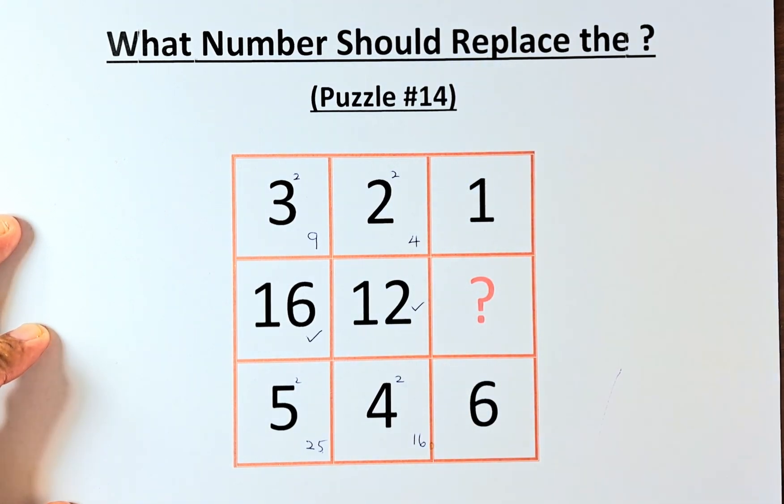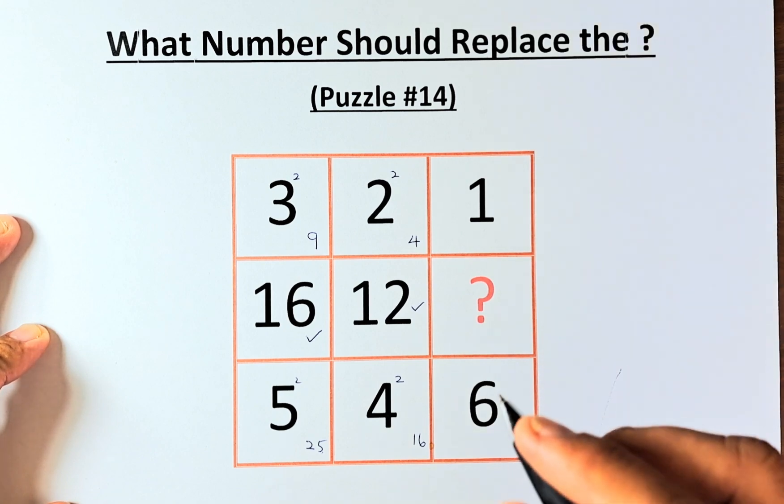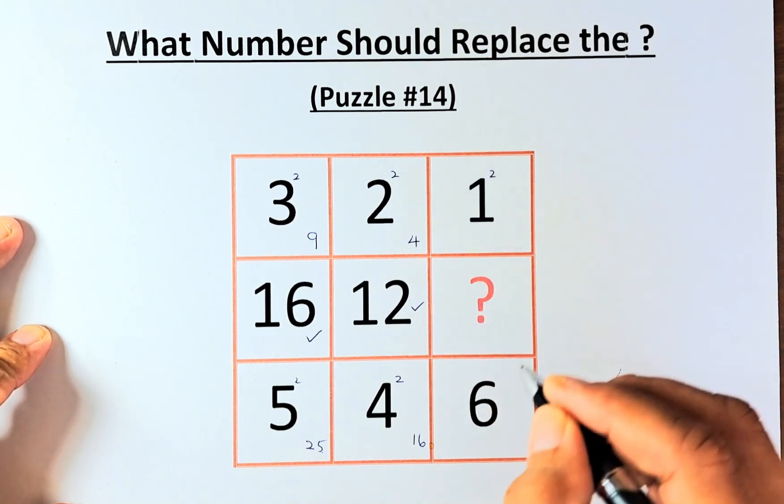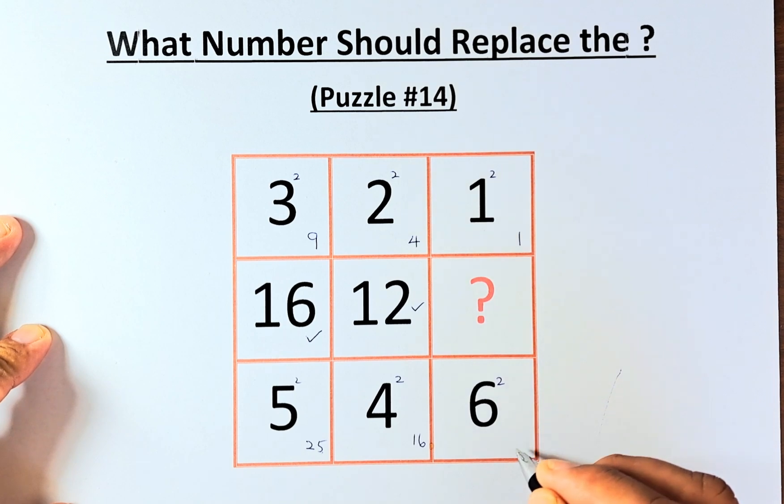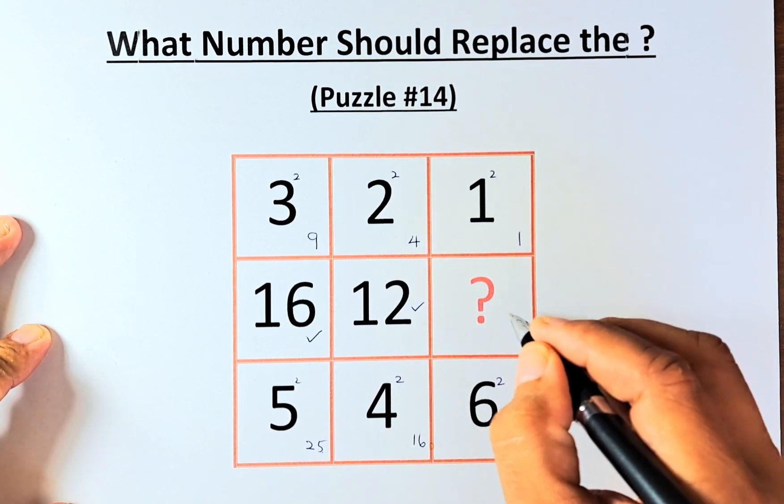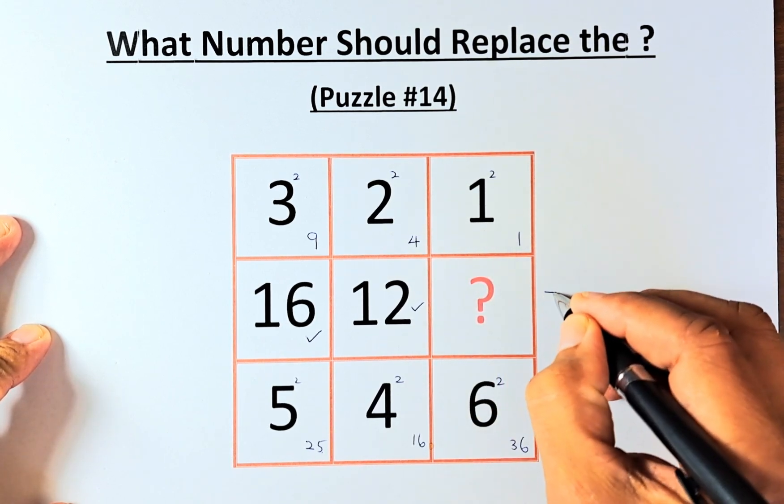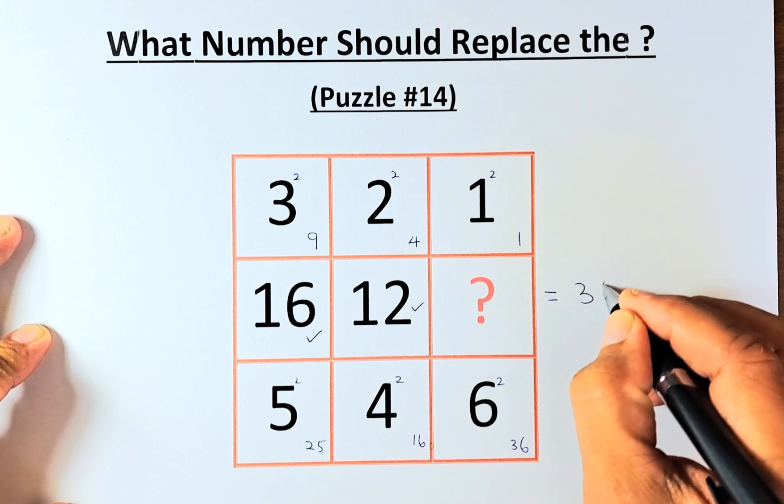And of course, in our last column, 1, question mark, and 6, you square both numbers again. 1 squared is 1, 6 squared is 36. You get the question mark: 36 minus 1, and the question mark is going to be 35.